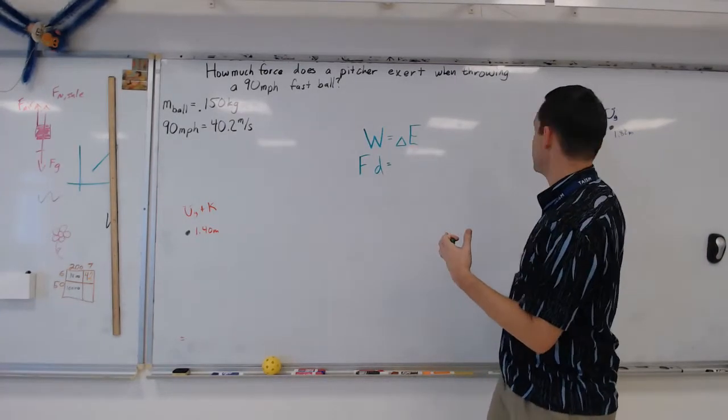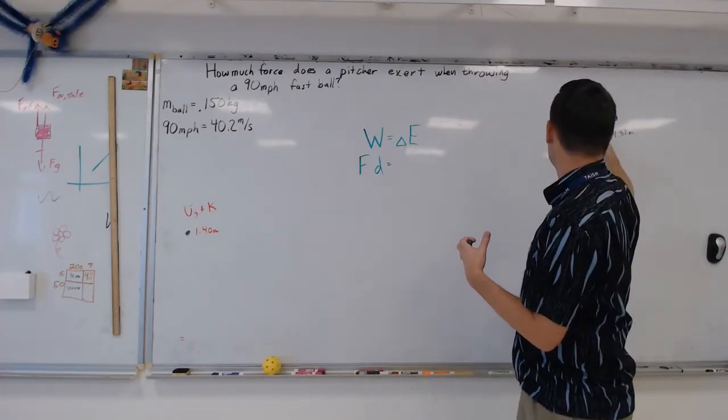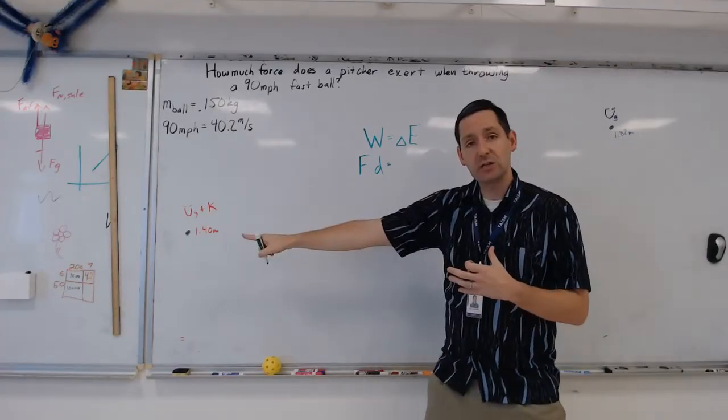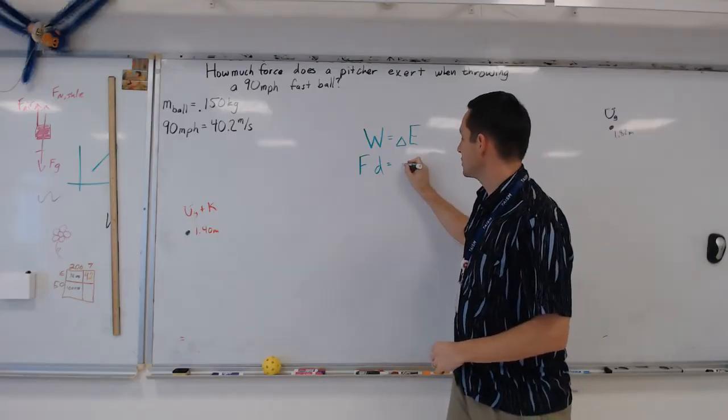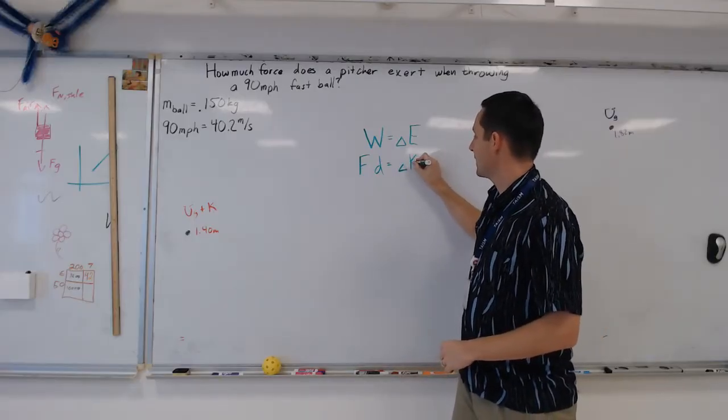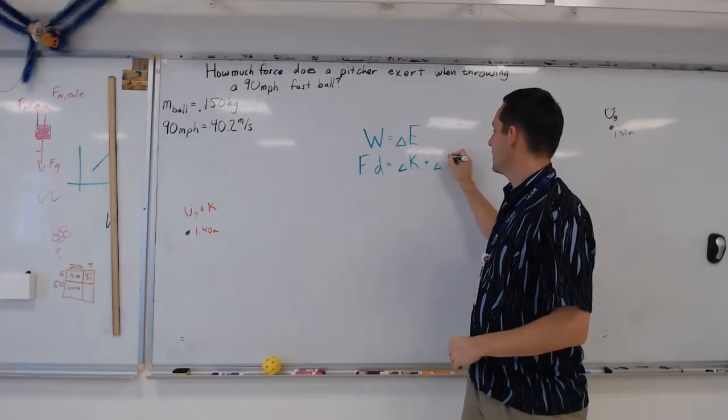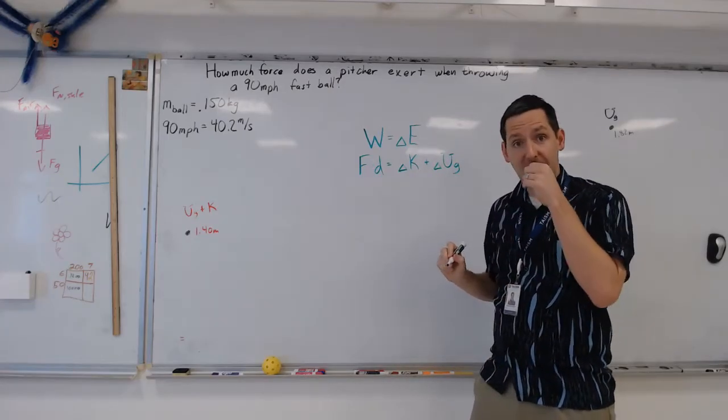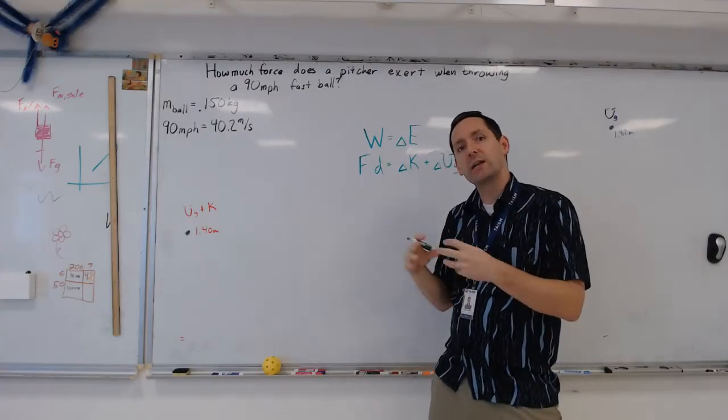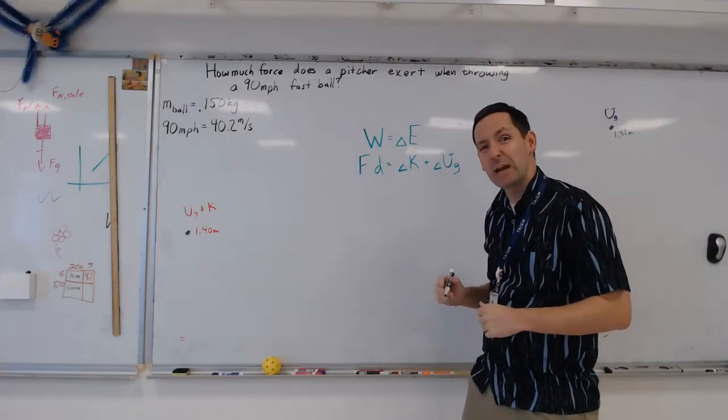So I can find out the average force being exerted by the pitcher, times the distance over which that force is exerted. That will be equal to the change in energy. There's two types of energy that are changing here. We've got the gravitational potential energy that's changing and the kinetic energy that's changing. So the change in energy is going to be equal to the change in the kinetic energy plus the change in the gravitational potential energy.